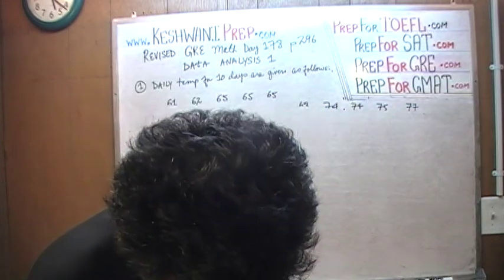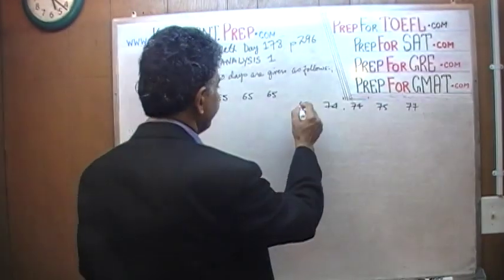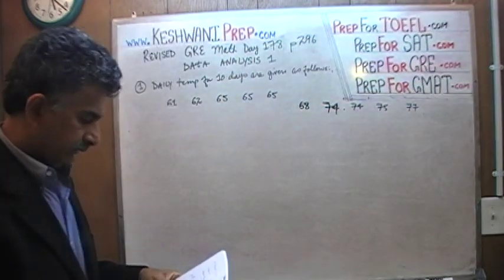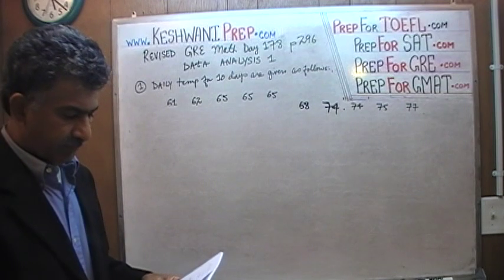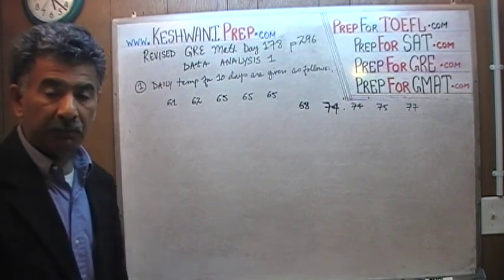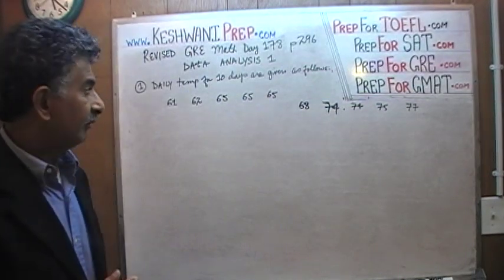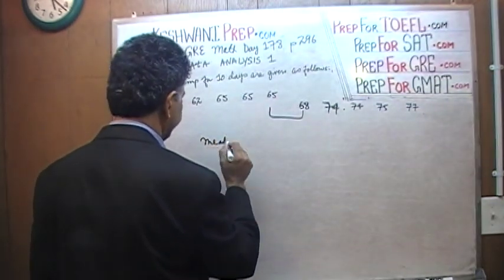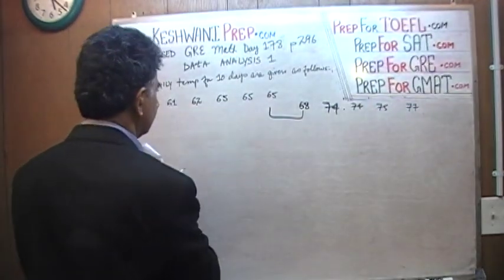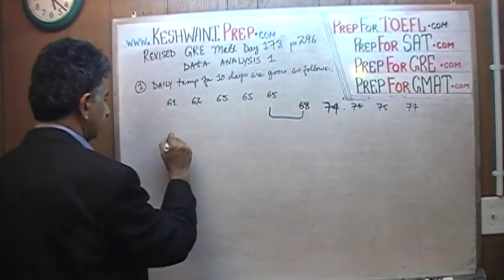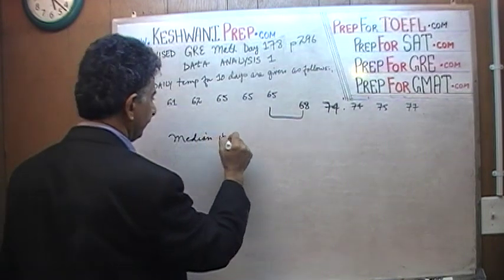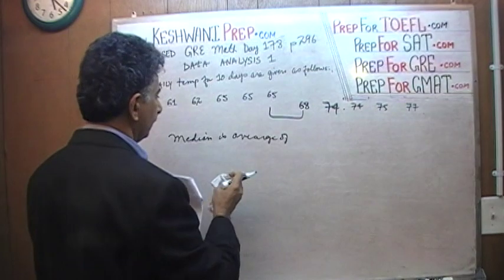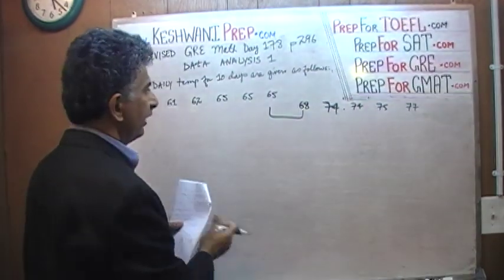The next question is: what's the median? The median is very straightforward. Since we have 10 observations — had we had 11, the median would be right in the middle — since we have 10 observations, the median is going to be the average of the 5th and 6th observations.